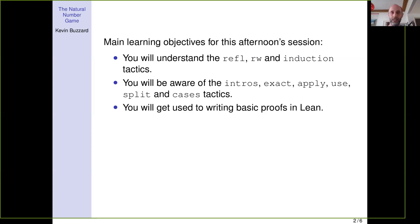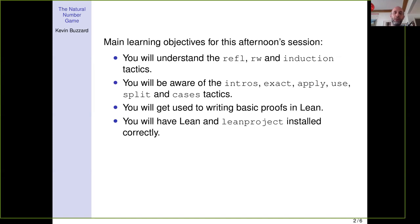If you know all the tactics on screen, you can basically prove that the natural numbers are a totally ordered commutative semiring. And by the end of today, the other key thing you should do is make sure that leanproject is working.